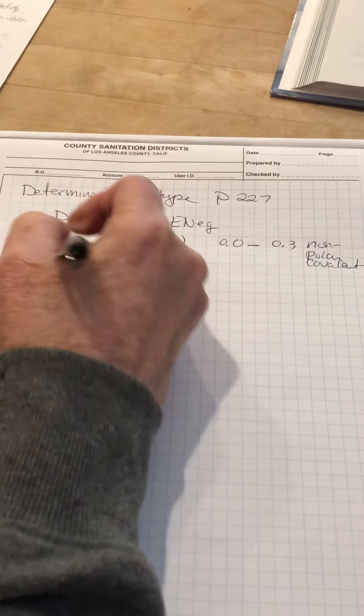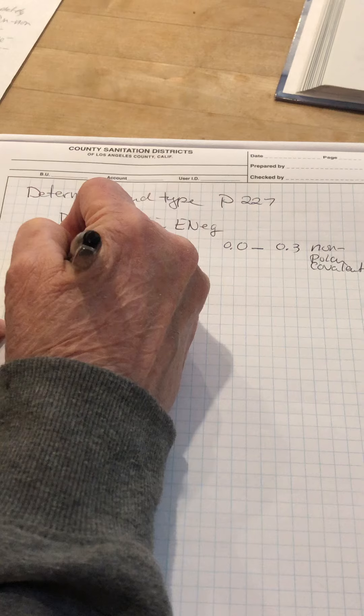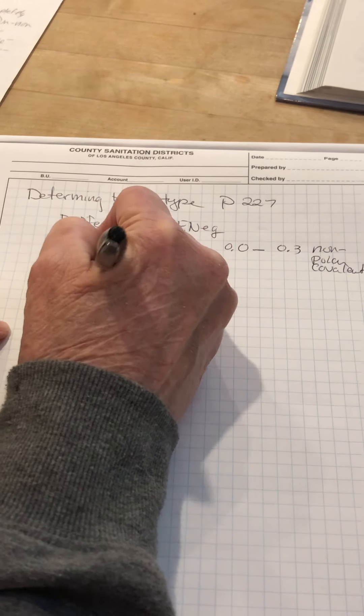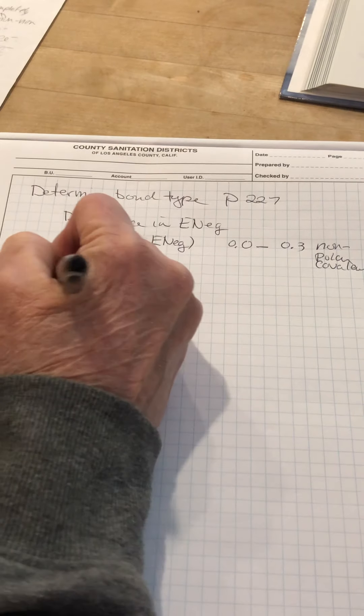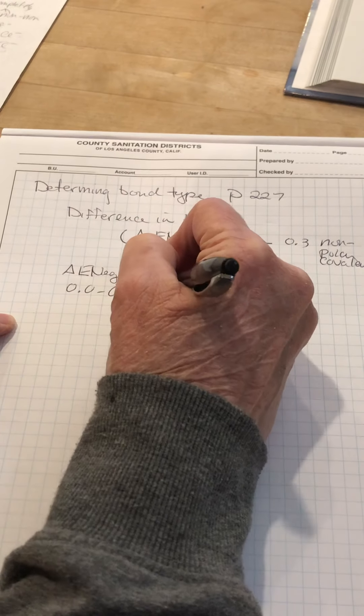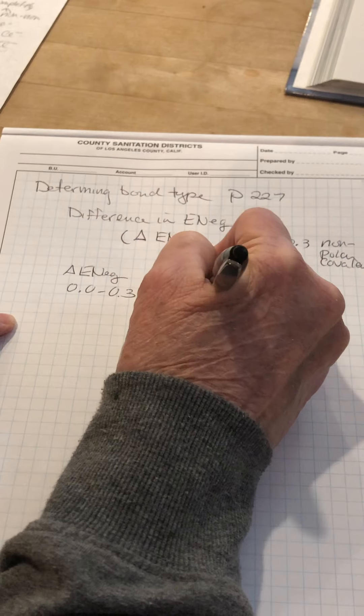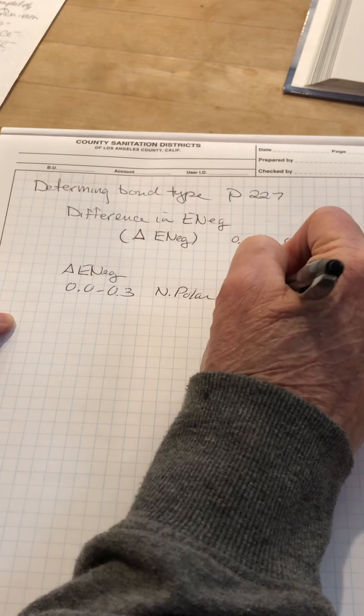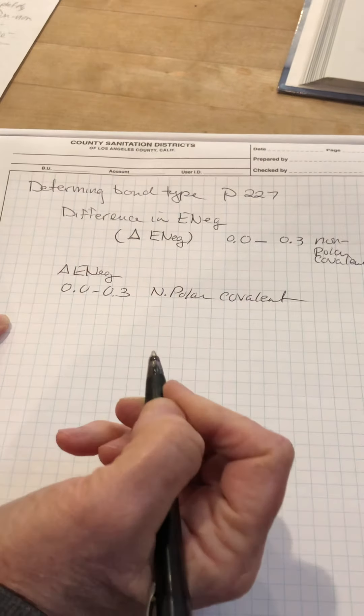I'm going to move this over here where there's more room. So delta E neg, 0 to 0.3, nonpolar covalent. There, that shows up better.